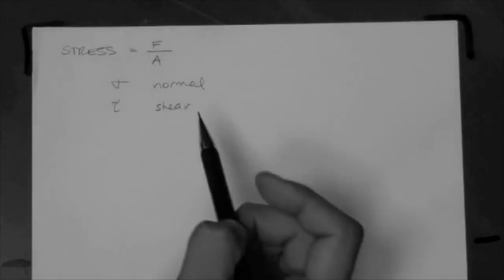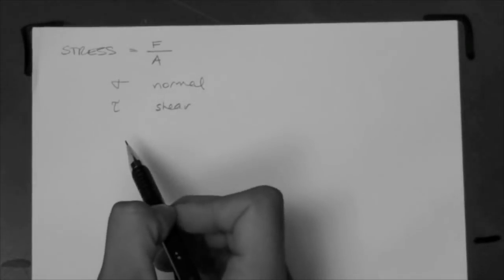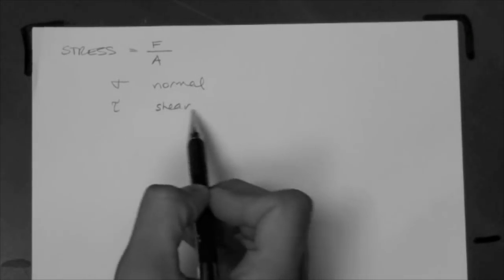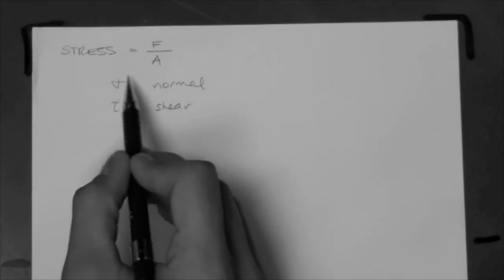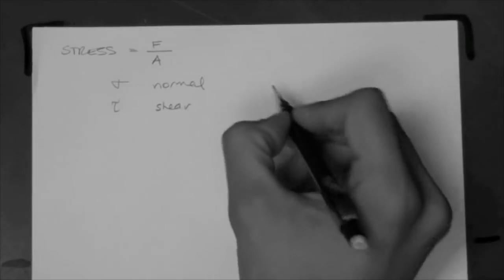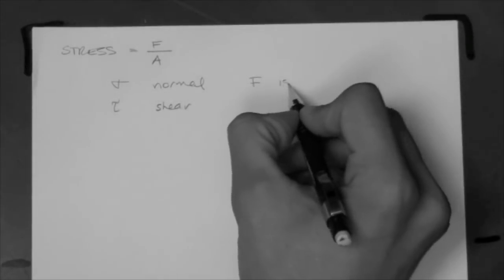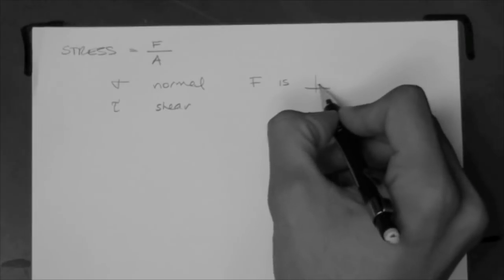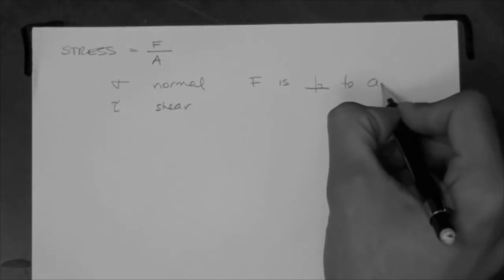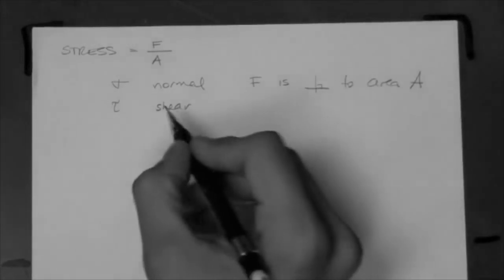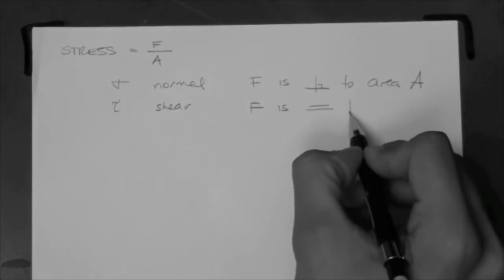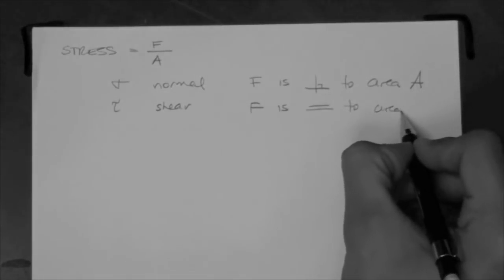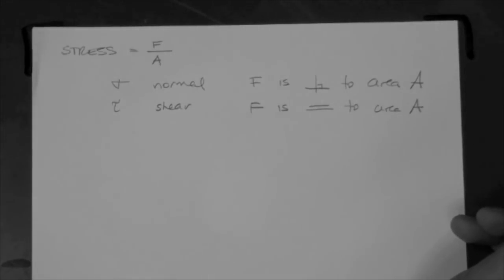So, a stress is a force over an area. That means that sigma is a force over an area, and tau, the shear stress, is also a force over an area. What's the difference? Well, for sigma, it's a normal stress, the force is normal or perpendicular to the area. For the shear stress, the force is parallel to the area in question.